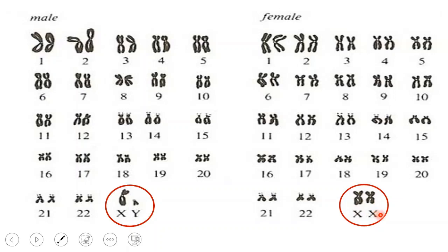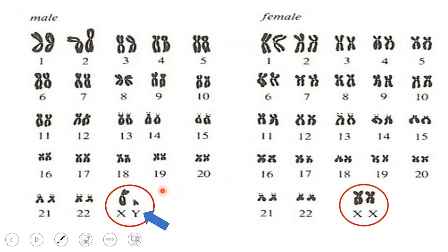Both males and females have an X chromosome. What makes a male a male is the Y chromosome — this small chromosome makes all the difference between the two genders. So the male determines the gender of the baby. If the sperm contains a Y chromosome, the baby will be a boy; if the sperm contains an X chromosome, the baby will be a girl.